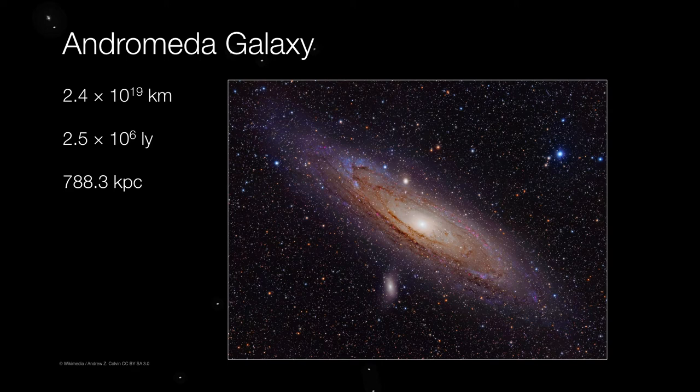In terms of light years, that works out to about 2.5 million light years, or 2.5 times 10 to the 6th. So we're at almost 800 kiloparsecs from Earth.